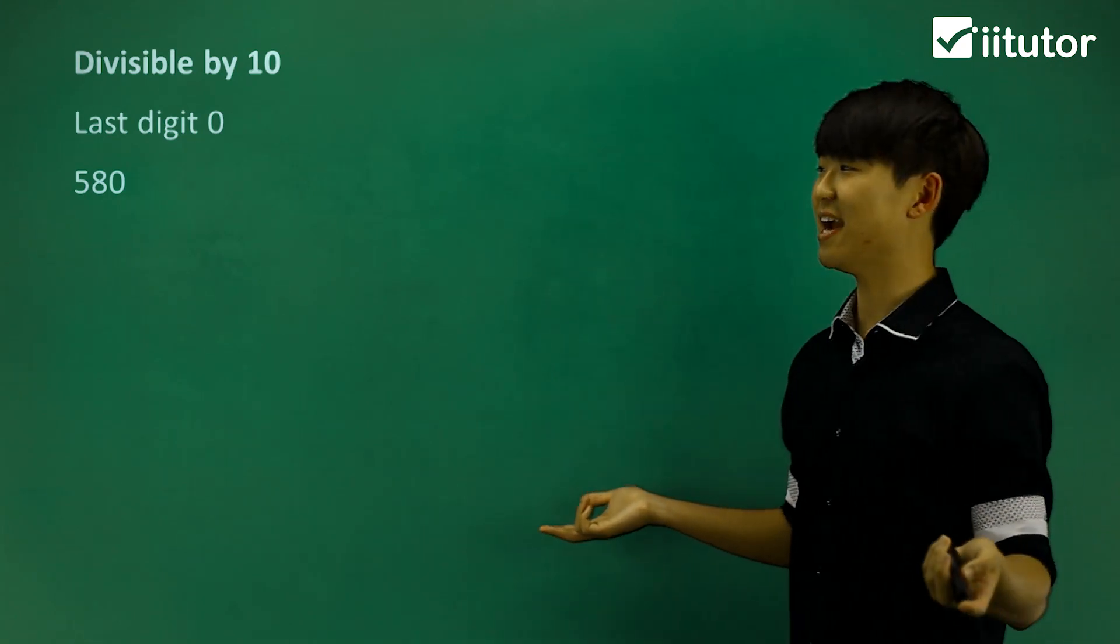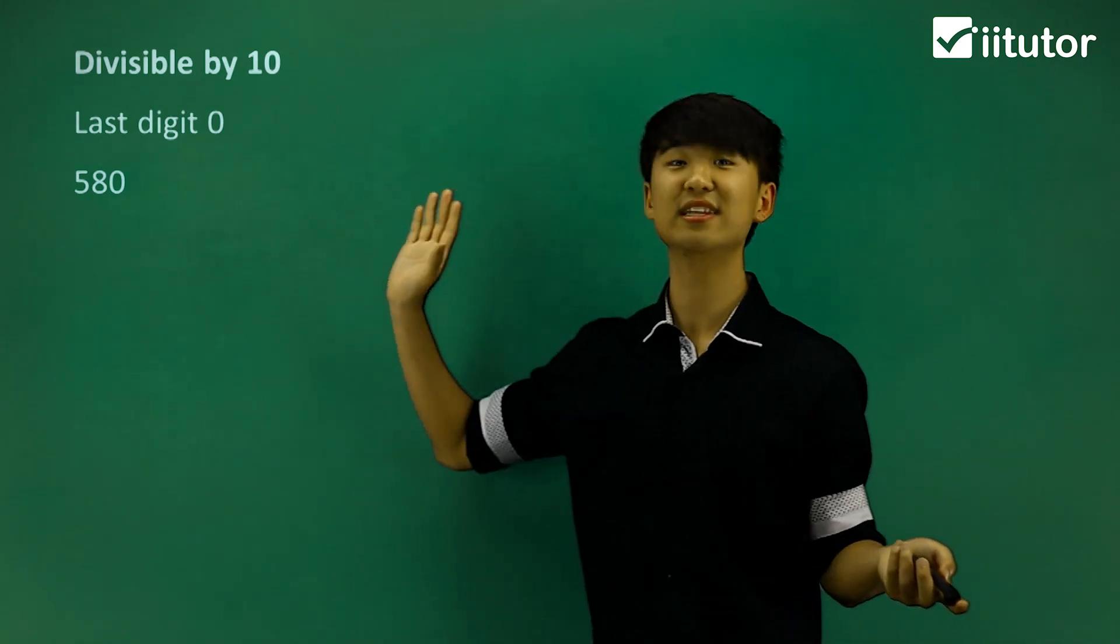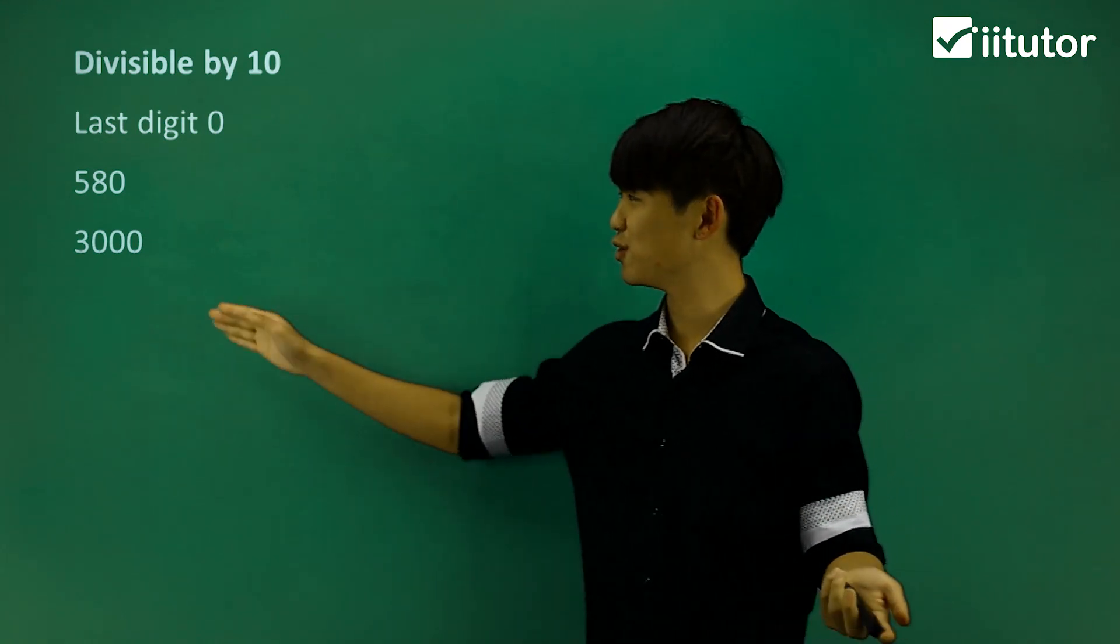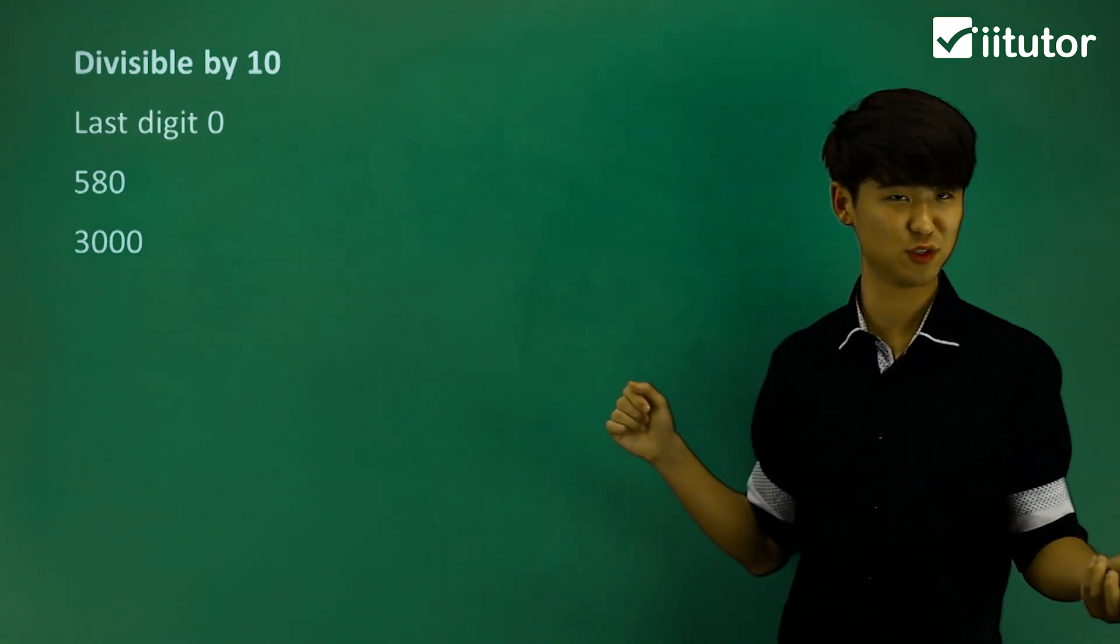So for example, 580, the last digit is 0, then this is divisible by 10. 3000, this one also ends in a 0, so this is also divisible by 10.